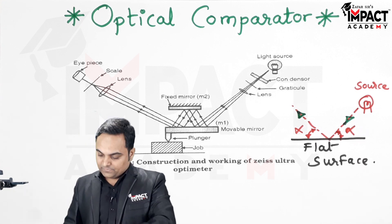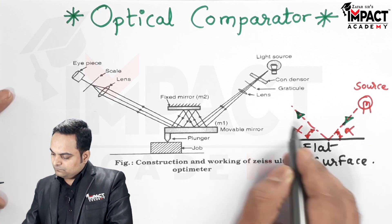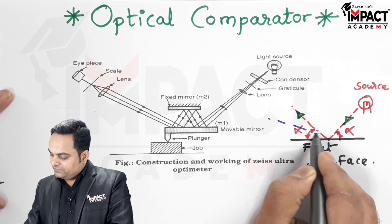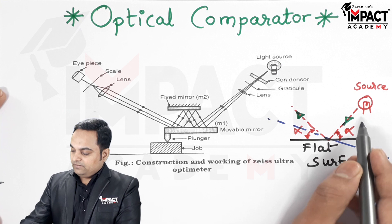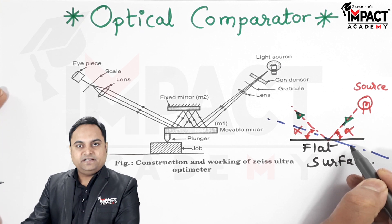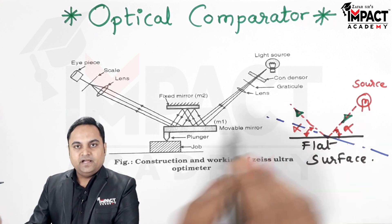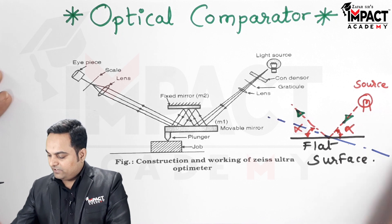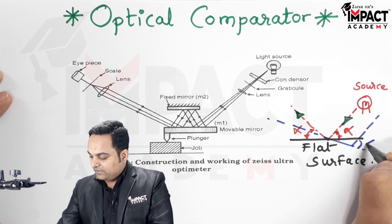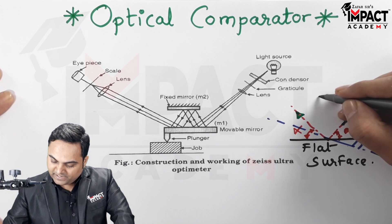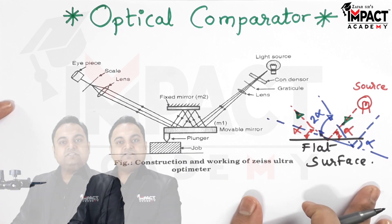But if the surface is not flat — that is, if it is tilted or inclined — then the light which is incident on this surface at an angle of alpha will be reflected at twice the angle, which is called 2-alpha. So from the source, if the light is striking this surface at an angle of alpha, it reflects back at an angle of 2-alpha.